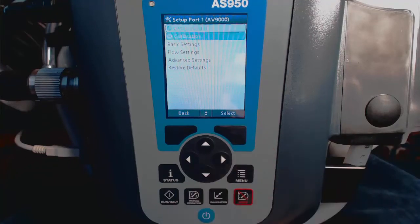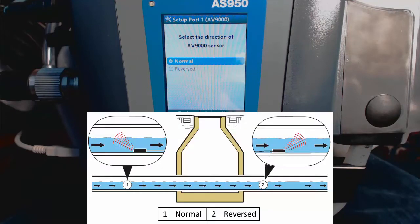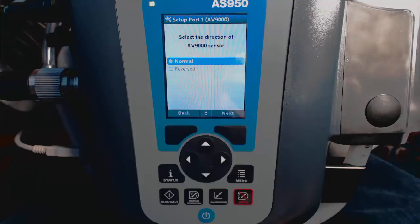I recommend using the Setup Wizard to calibrate and set up the sensor, so we're going to select Setup Wizard, and now walk through the process. The first question pertains to Sensor Direction. Choose Normal or Reversed based upon which direction the sensor will face in the flow.